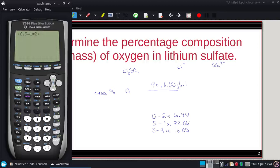Followed by 32.06, followed by 4 times 16, gives a molecular weight of 109.94.